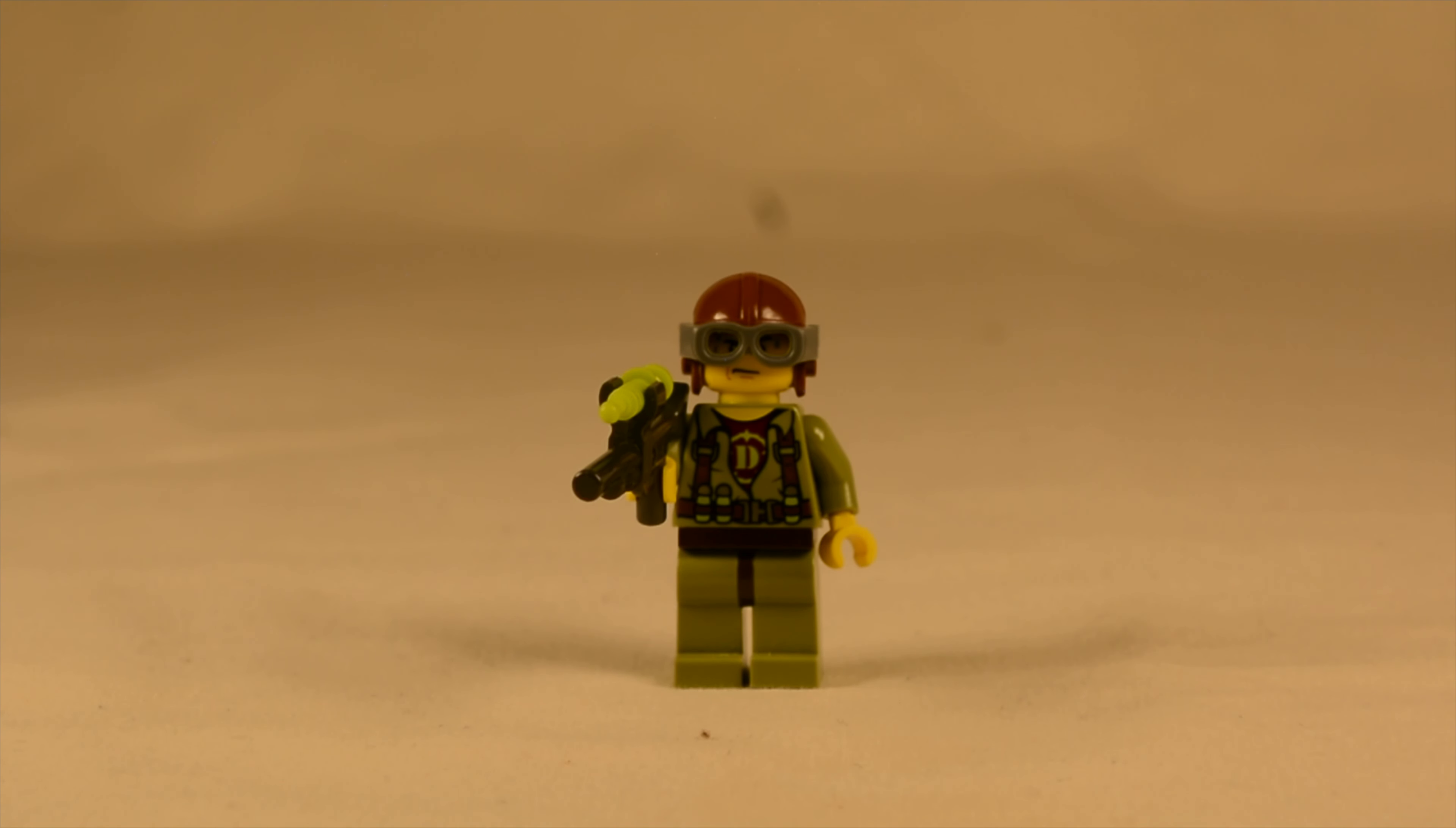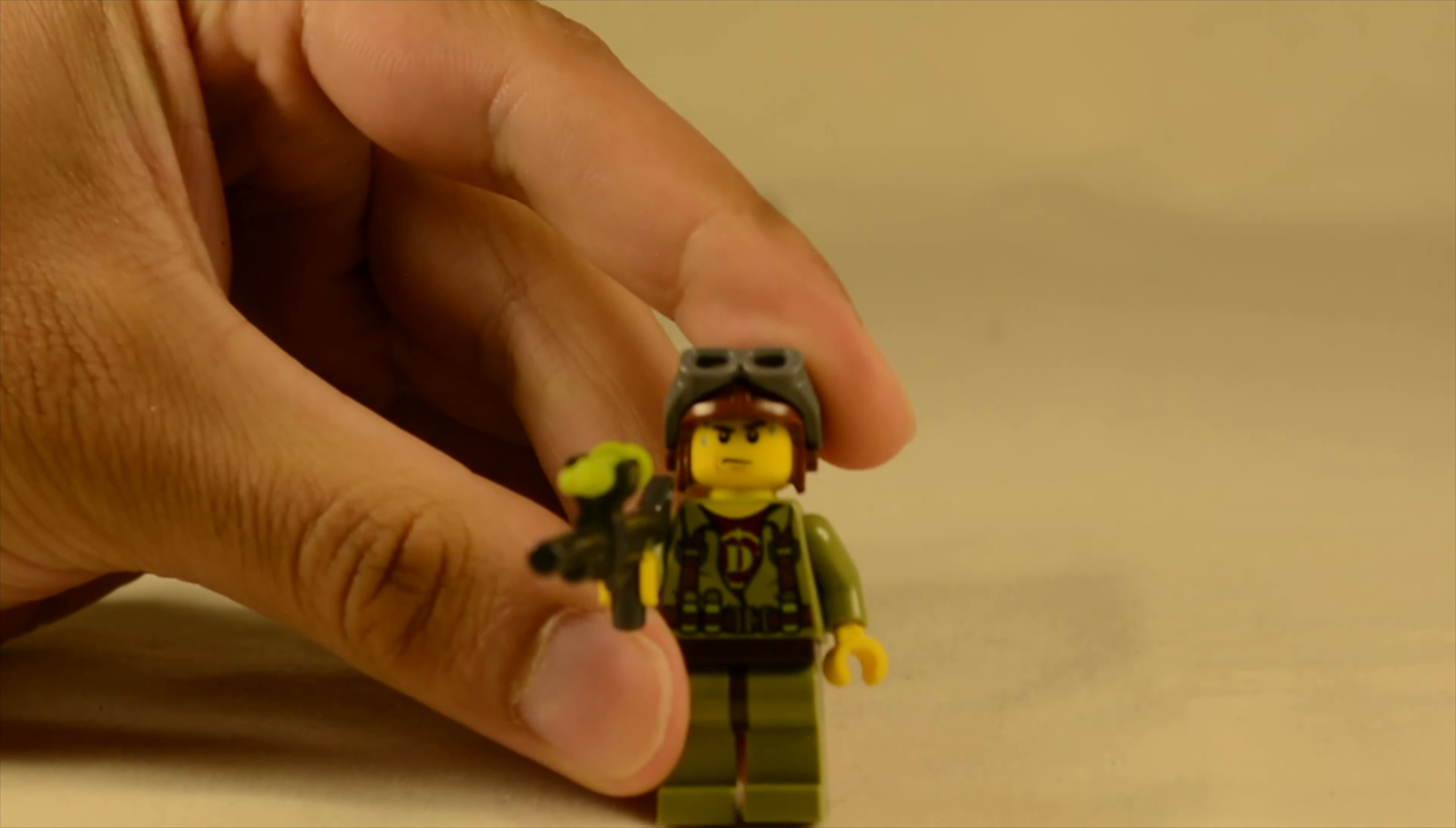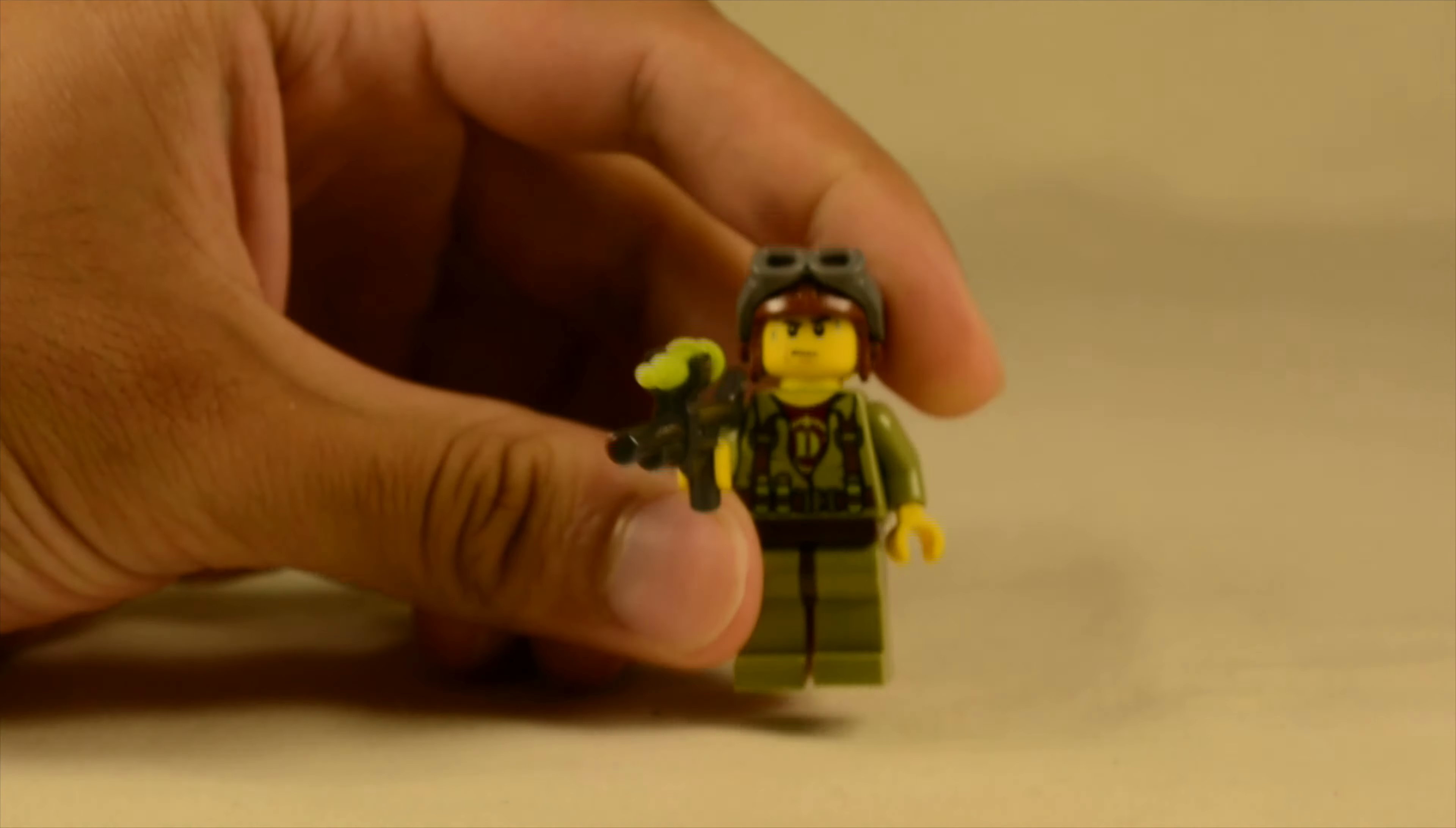All right so this set came with a single unnamed character. It doesn't really say anywhere on the box so I'm just going to call him the dino tracker. He has this aviator's helmet with the glasses obviously. The goggles rather. Those can be lifted up to see that he has a fairly concerned almost sweating face. He also has this gun with a tranquilizer dart in lime green and his main outfit is based in the olive green color.